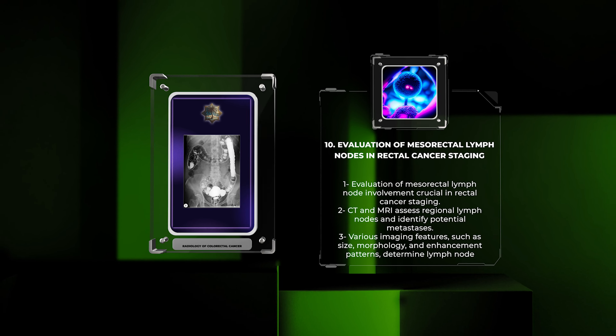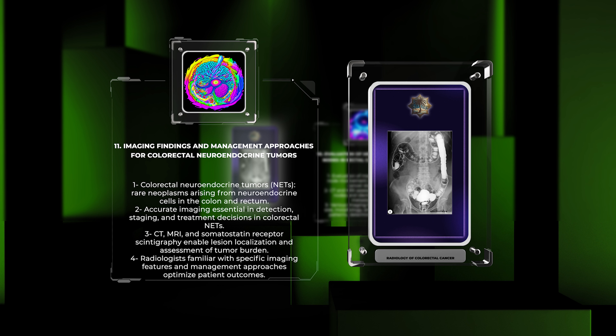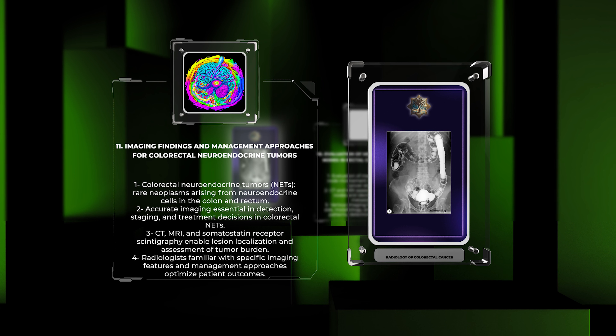Colorectal neuroendocrine tumors (NETs) are rare neoplasms that arise from neuroendocrine cells in the colon and rectum. Accurate imaging plays a vital role in detection, staging, and guiding treatment decisions. Various imaging techniques including CT, MRI, and somatostatin receptor scintigraphy enable lesion localization, assessment of tumor burden, and identification of potential metastatic sites. Radiologists must be familiar with the specific imaging features and management approaches associated with colorectal NETs to optimize patient outcomes.